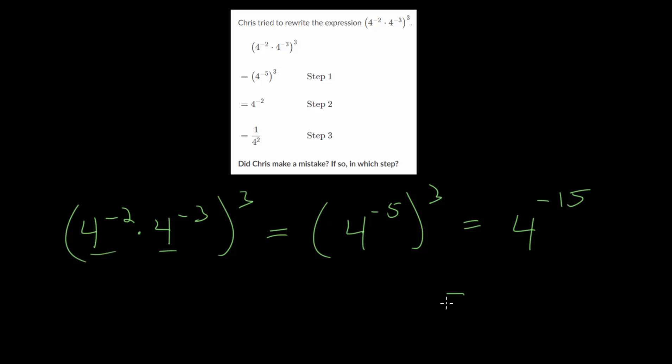You can interpret this as dividing by 4 15 times, since negative exponents are really just repeated division. If you wanted, you could rewrite this as 1 over 4 to the 15th, but it really just depends how the answer needs to be expressed. Now going back through each of these steps, let's see where the mistake was made. The first step makes sense, because we had the same thing here. You added the exponents, and they became 4 to the minus 5, all cubed. Then in step 2, that's where the mistake occurs.